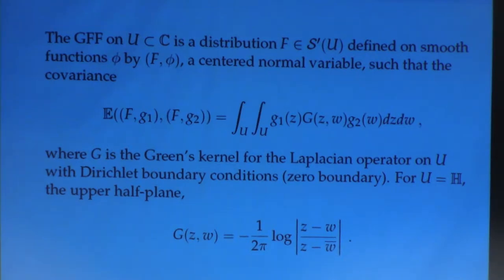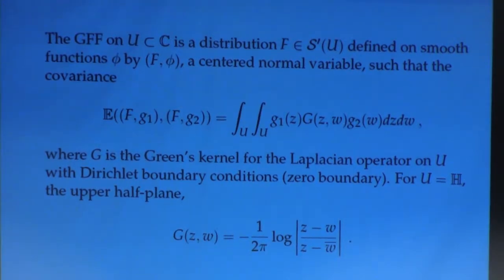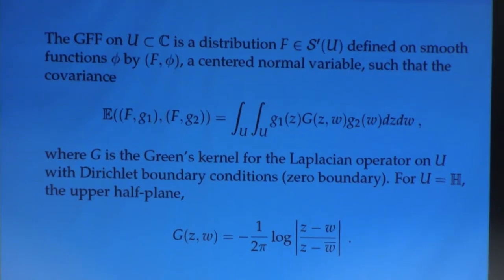So, that's how you define the Gaussian free field. It's a random distribution which gives you, when you input a smooth function, it gives you a centered Gaussian variable. The covariance of any of these two variables being computable in terms of this Green's kernel over u.